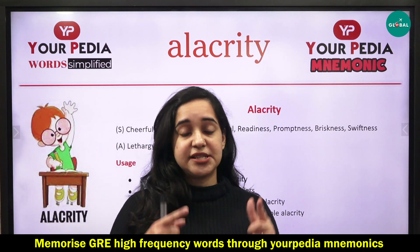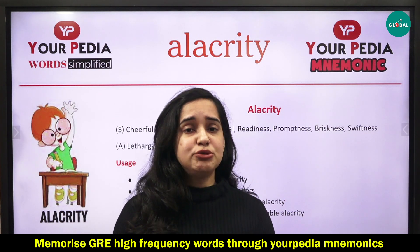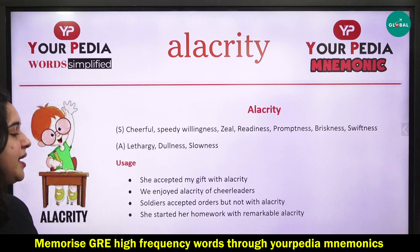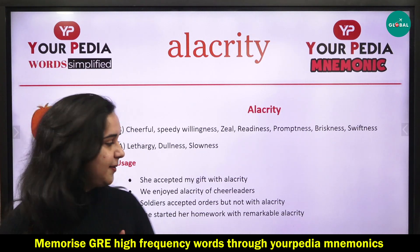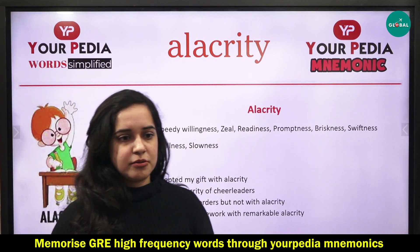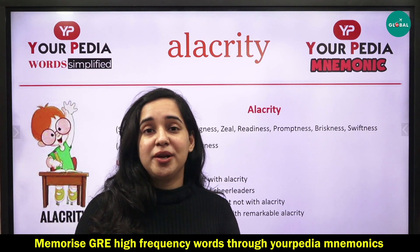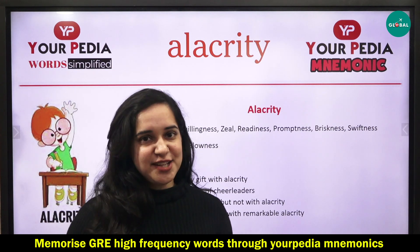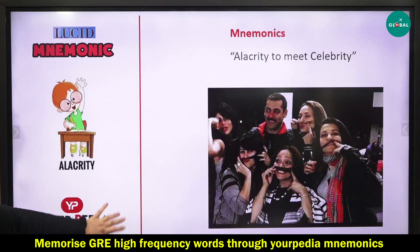Now let's look at how to use this word in a sentence. 'She accepted my gift with alacrity' — she was very happy. Another example: 'We enjoyed the alacrity of cheerleaders.' Obviously cheerleaders are very happy whenever they are performing or in a state of competition, so we enjoyed their cheerfulness — their alacrity.